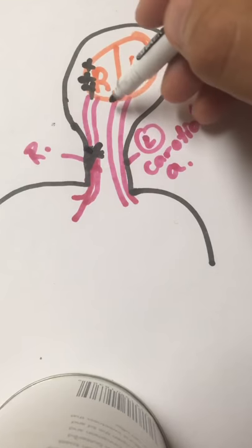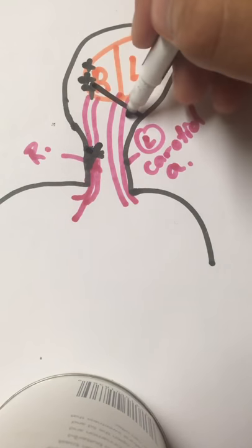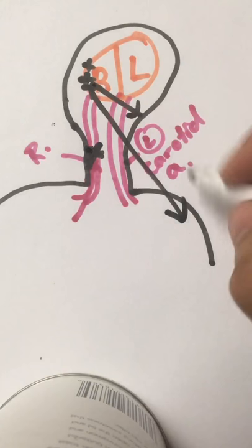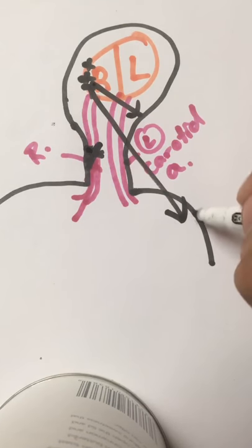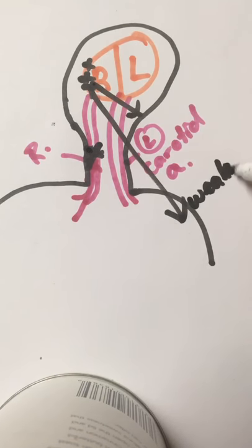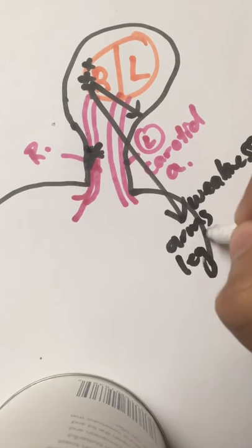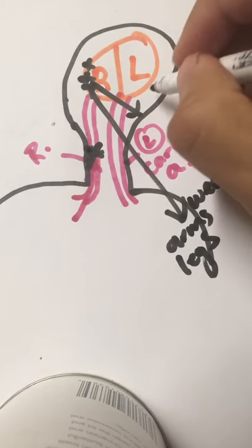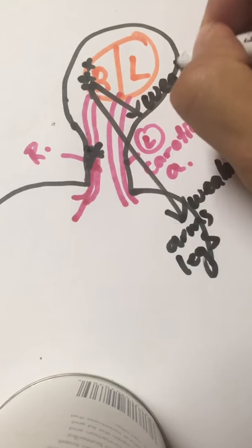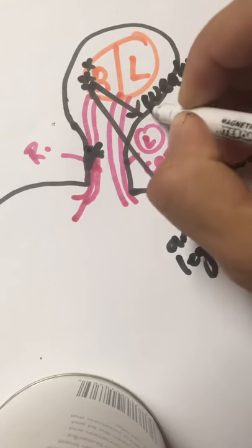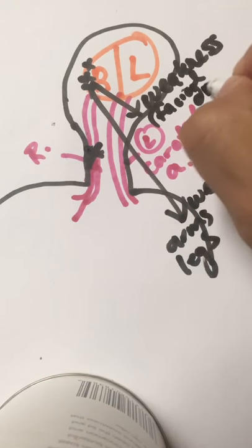And what's going on is the right side of the brain controls the left side of the body. So what you're gonna have is in the arms and legs, you're gonna have weakness in the arms and the legs, and then in the face you're gonna have also weakness of the facial muscles.